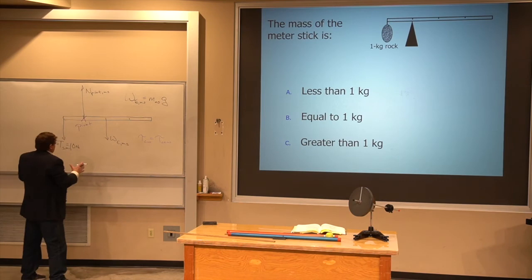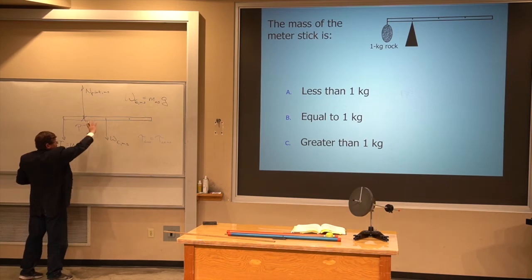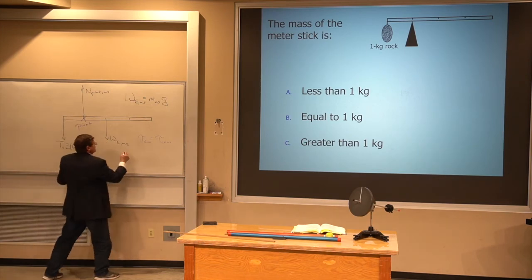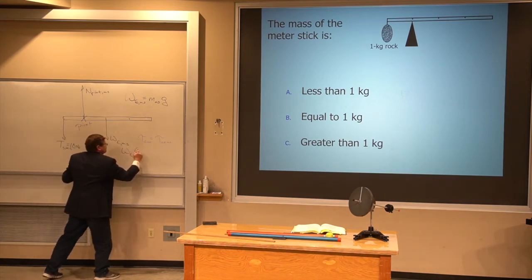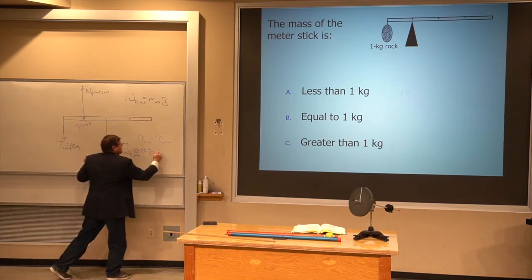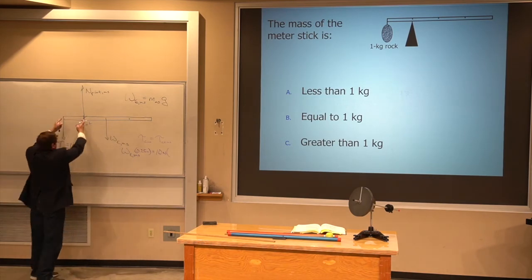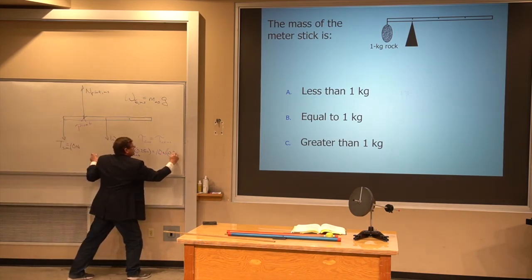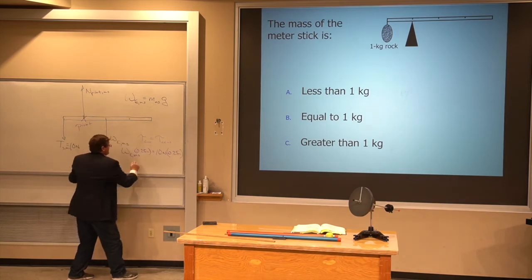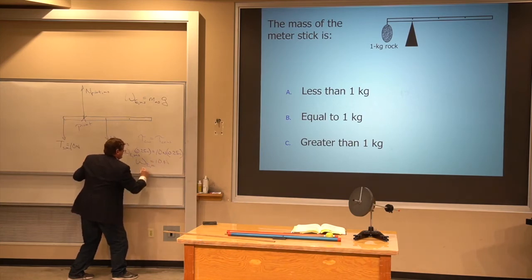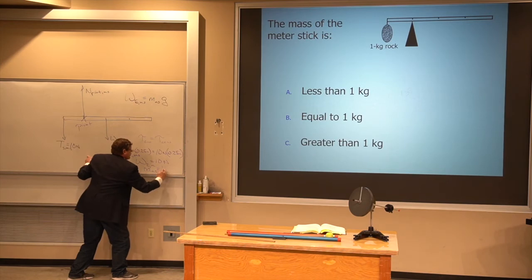And now, I figure out which of these forces is trying to make this meter stick go clockwise and which is trying to make it go counterclockwise. Now, this one is trying to make it go clockwise, so the weight of the meter stick times its lever arm, which is going to be 0.25 meters, is going to equal this force of 10 Newtons times its lever arm, which is also 0.25 meters. And that's going to give me the weight of the meter stick is 10 Newtons, and that means the mass of the meter stick is 1 kilogram.